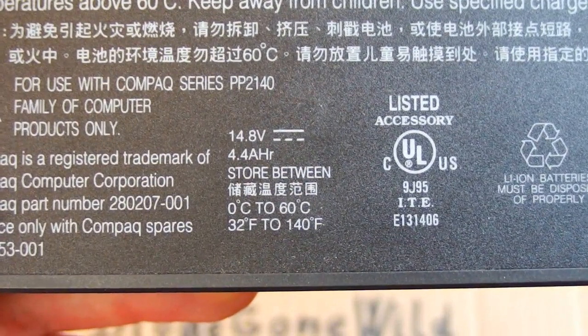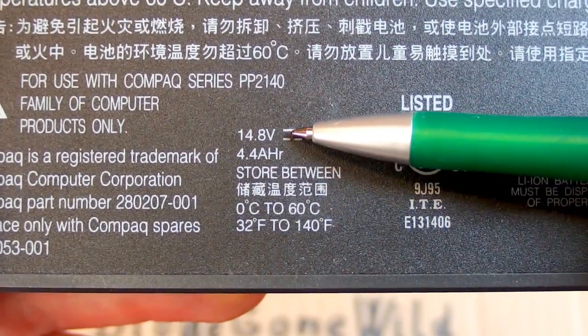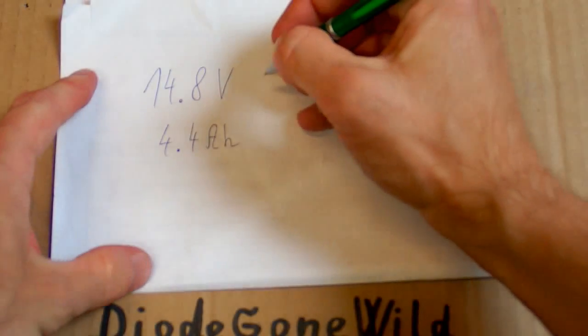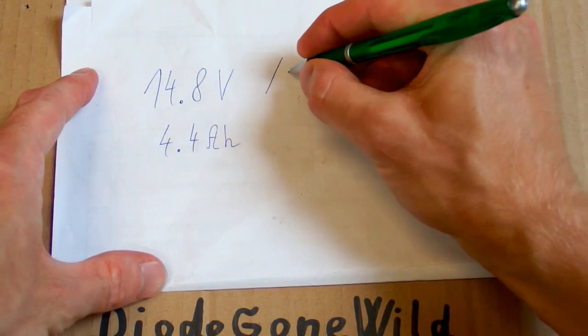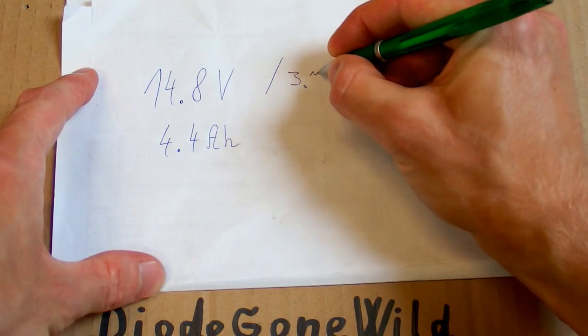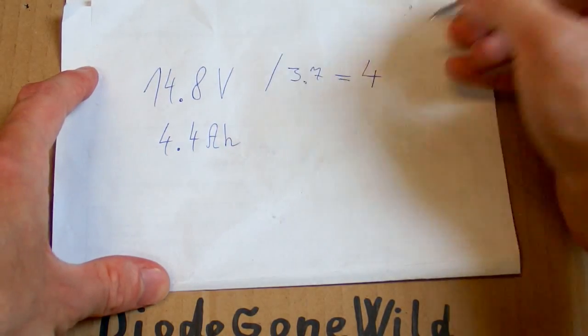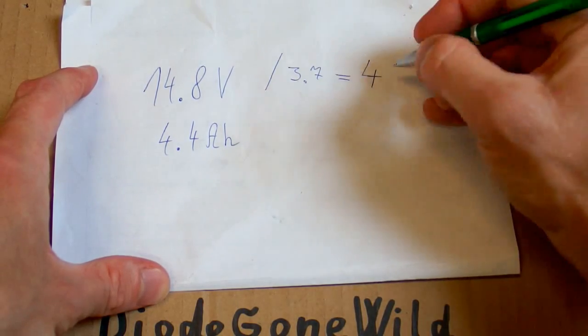Now let's take a look at this one. It says 14.8 volts and 4.4 amp hours. So divide the voltage by the voltage of one cell and you get four. So there are four batteries or cells in series.